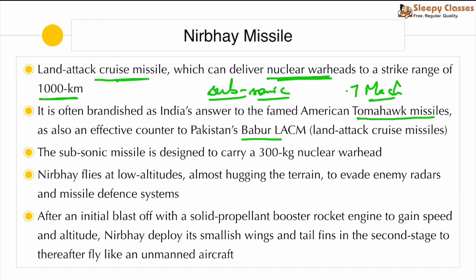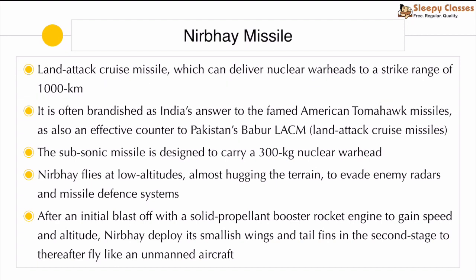Pakistan's LACM testing had failed some time before, but now there is good news on the Nirbhay front. It carries around 300 kg nuclear warheads. In terms of its flying trajectory, it flies at low altitudes, almost hugging the terrain, which helps it evade enemy radars and missile defense systems. After the initial blast off, a solid propellant booster in the rocket engine helps it gain speed and altitude, after which the Nirbhay deploys its small wings and tail fins in the second stage.